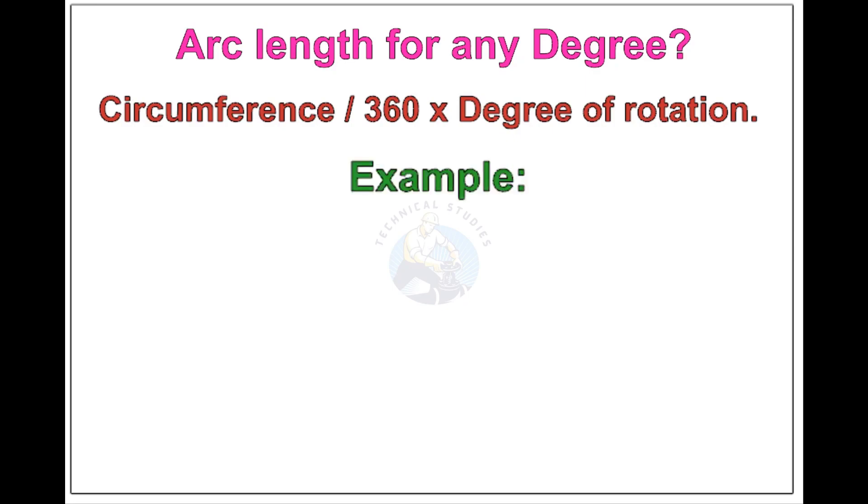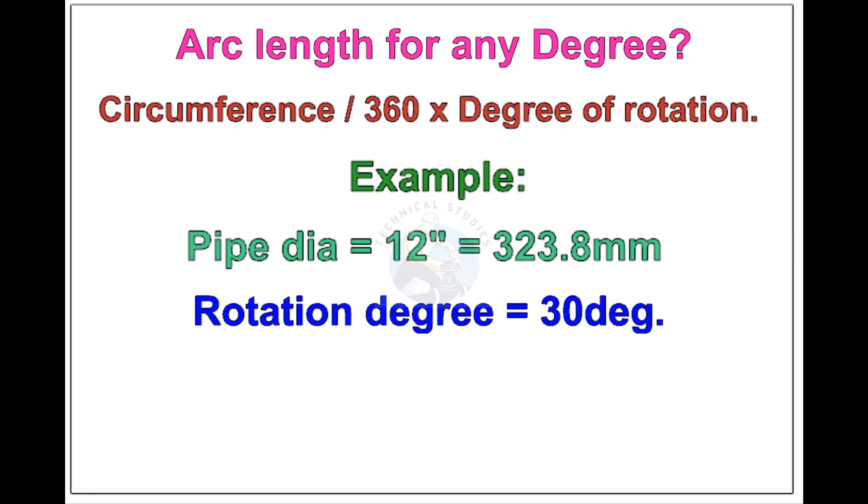Let us check the arc length of a 12-inch pipe rotated 30 degrees. Apply the formula. The answer is 84.8 millimeters.